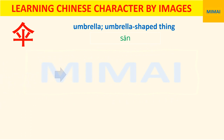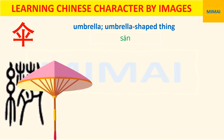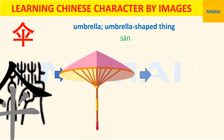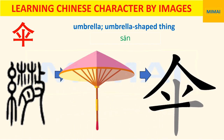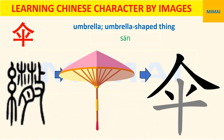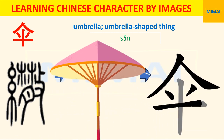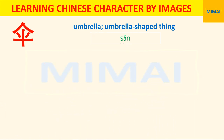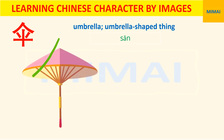This character used to look very different, but now it looks like the shape of an umbrella. It is drawn with the shape of the top, the frame, and the shaft of an umbrella.